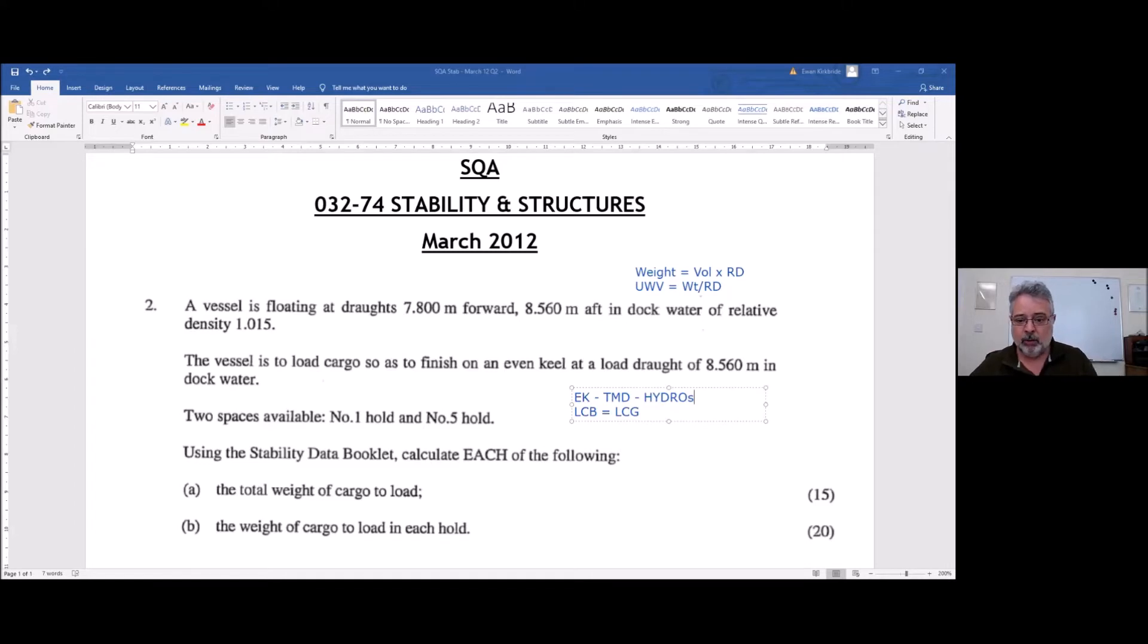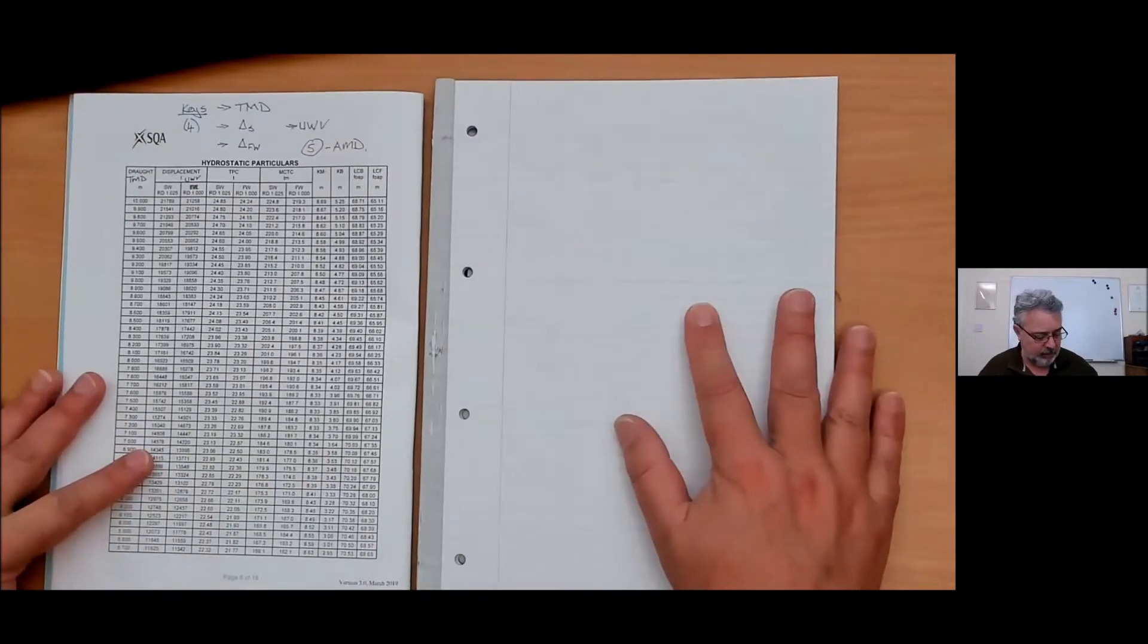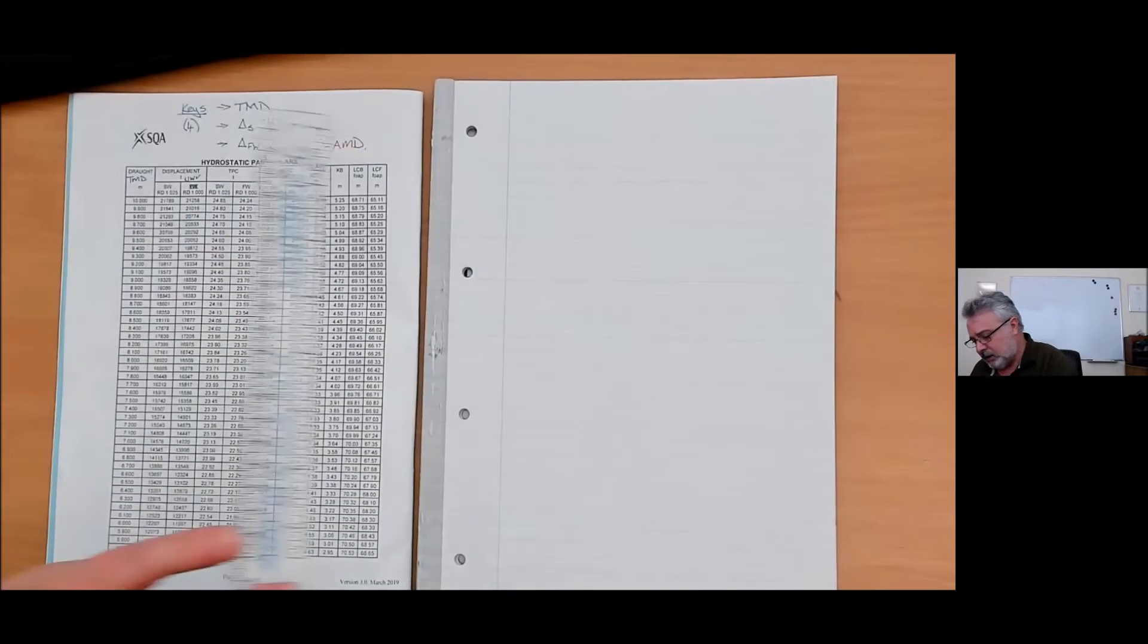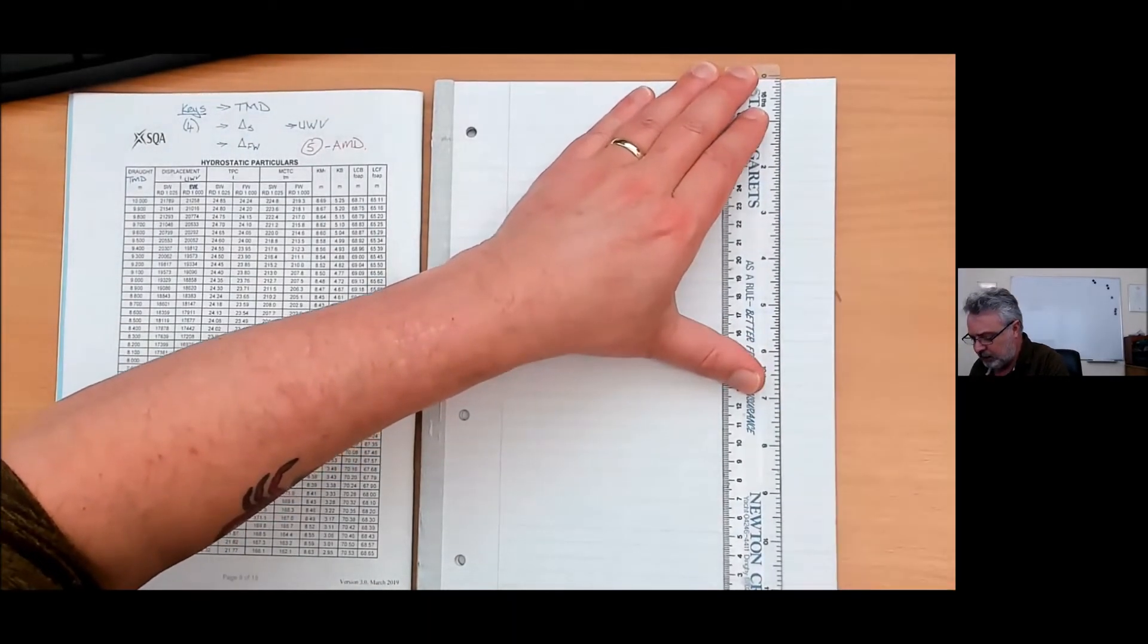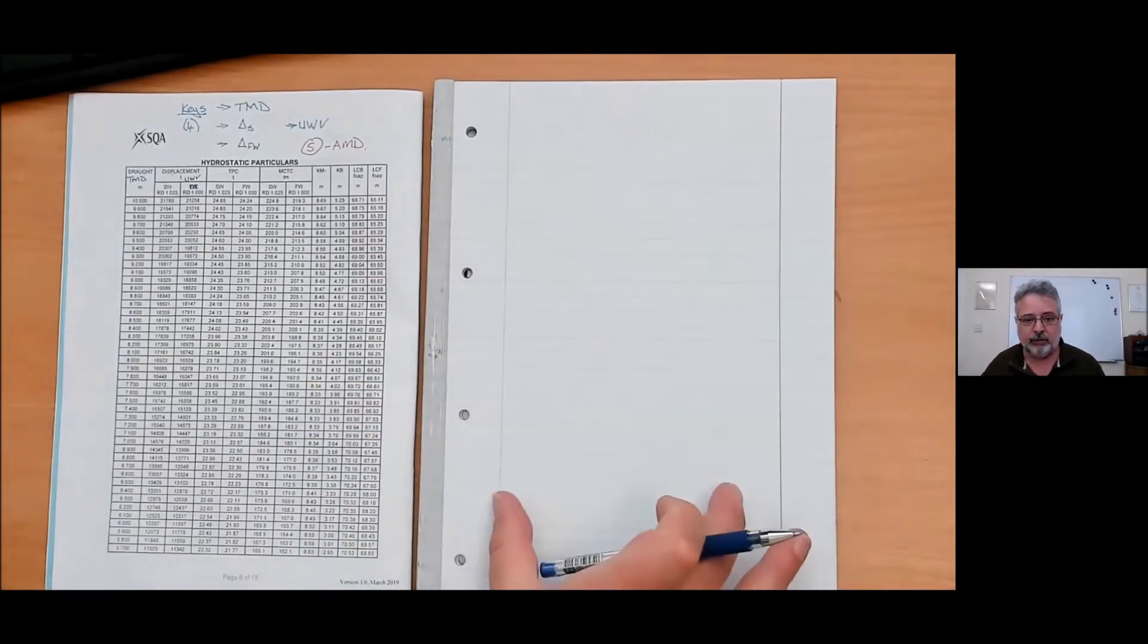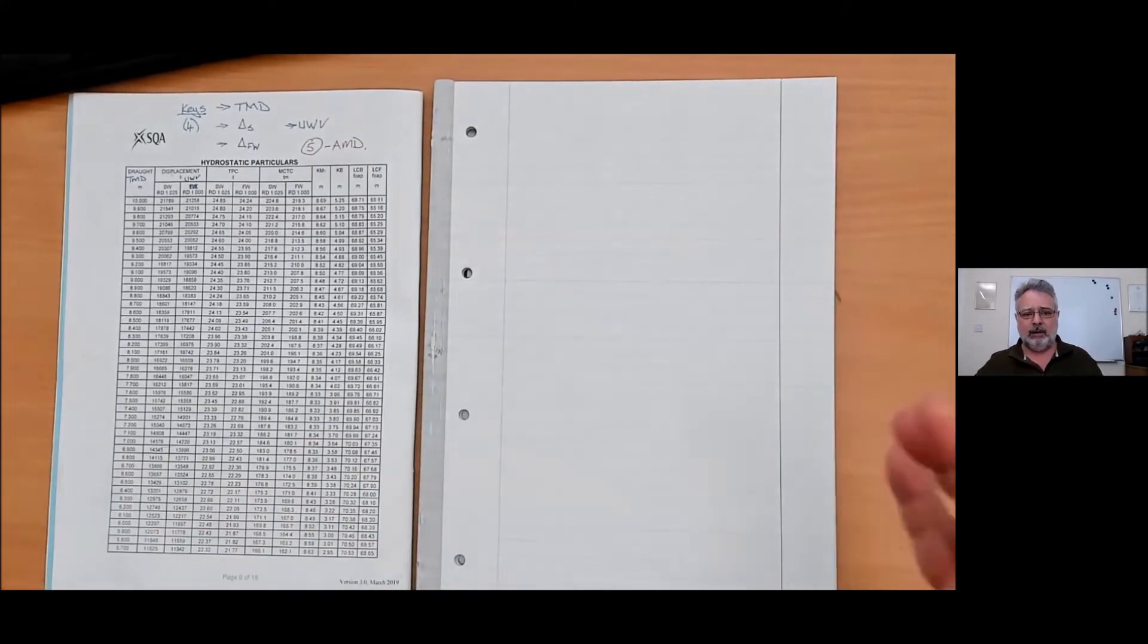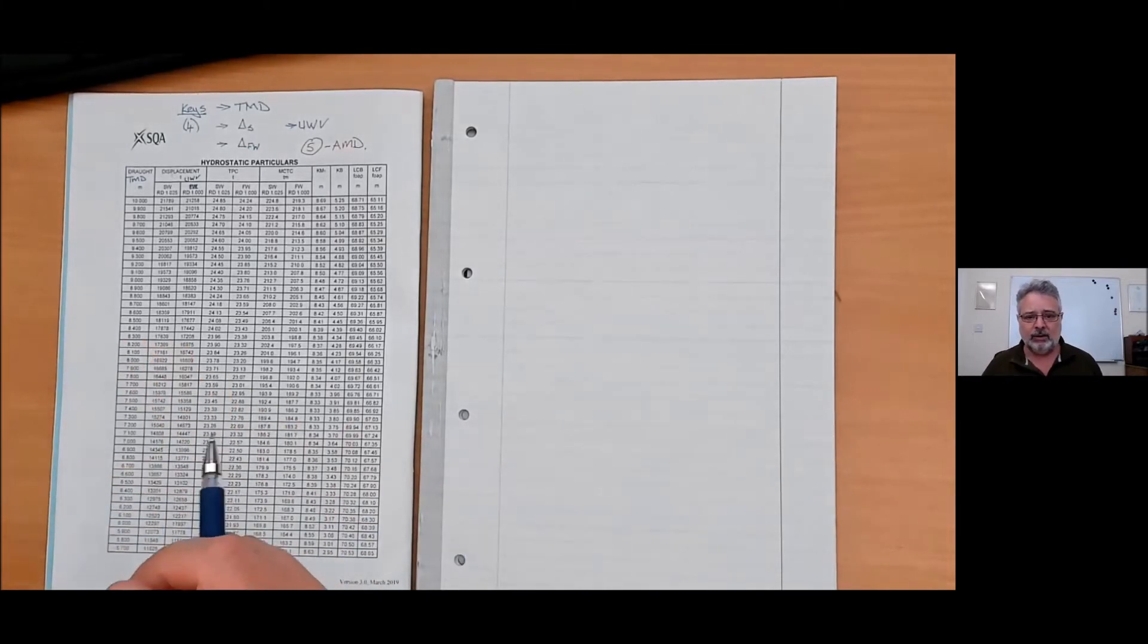So we've got our warnings. We've got dock water, so don't forget to use volume. We're even keel, so hydros and MCTC. So we'll put that to bed and just open up our workbook and let's get started. I'll share my workbook with you as we calculate. I'll just take out the right hand margin so I'm restricted in the same way as you would be at SQA.